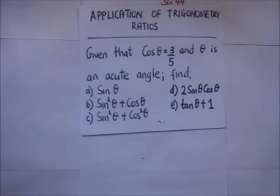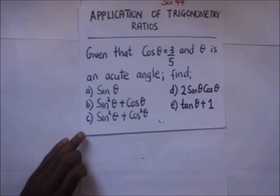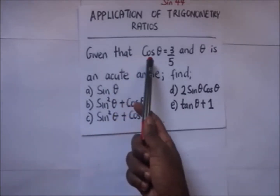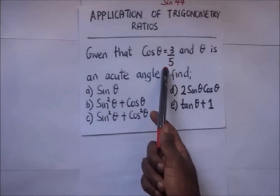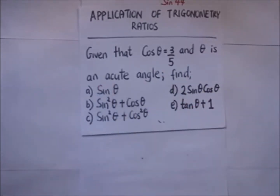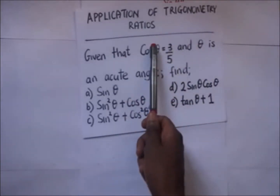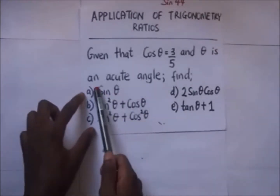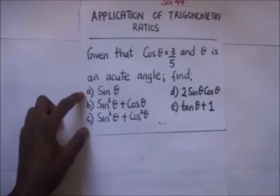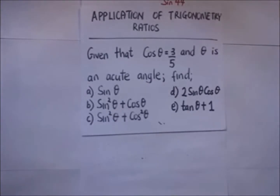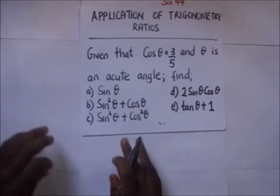As we continue the application of trigonometrical ratios, we have a worked number to do here. The question says we are given cos theta which is three over five, and theta is an acute angle. We know that an acute angle lies between zero and 90 degrees. We are asked to use this information to find the values of sine theta, sine squared theta plus cos theta, and so forth.